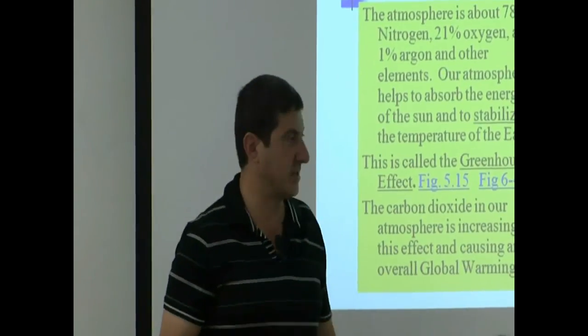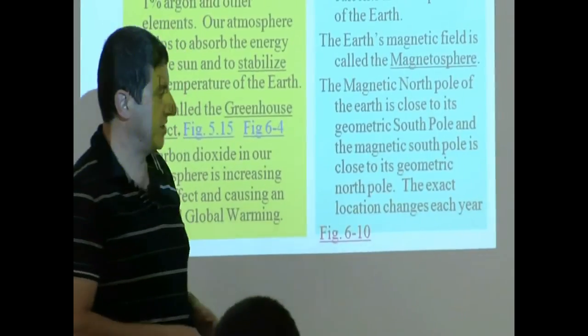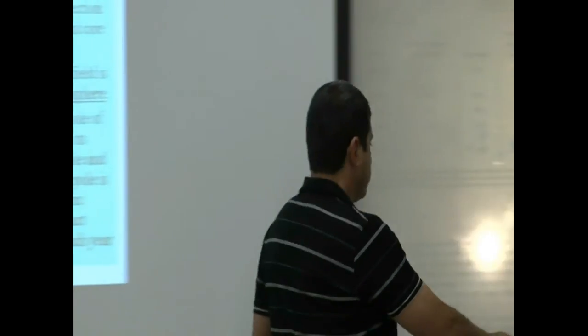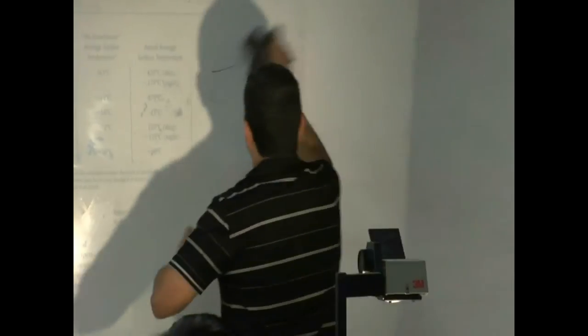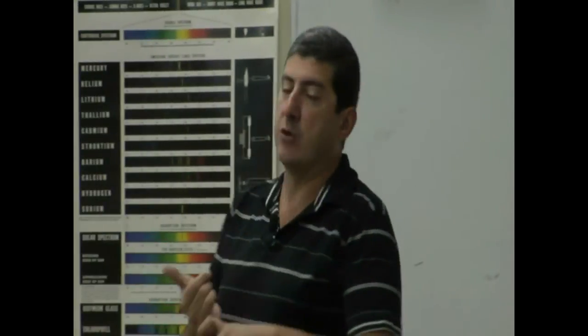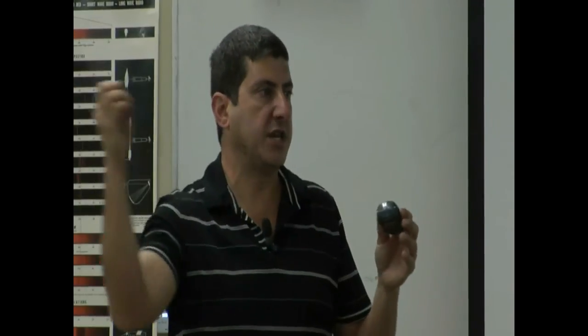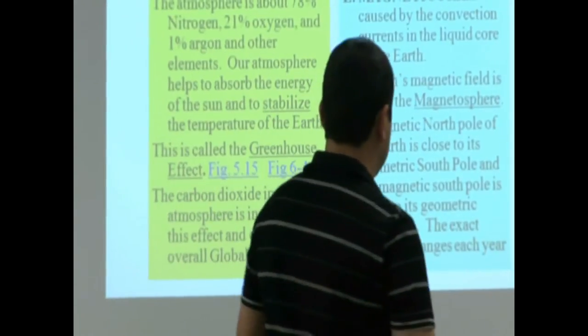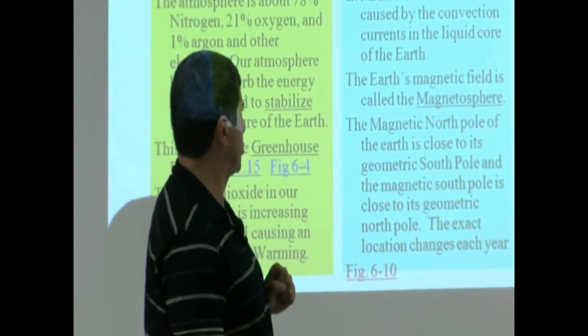Now let's go to the magnetic field of the Earth. The magnetic field of the Earth is helpful for us too, not just the atmosphere, because without the magnetic field we couldn't navigate. We wouldn't know where north is, we wouldn't know where south is, and we also wouldn't be able to trap the dangerous rays coming from the sun. So the magnetic field traps those dangerous rays.